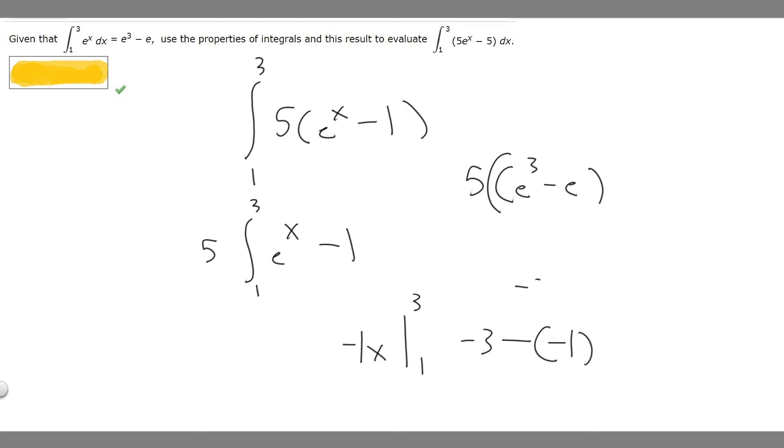Then we can just add these. It's minus 3 plus 1, so minus 2. Now we've found the integral of minus 1 from 1 to 3, so it's going to be minus 2 here.